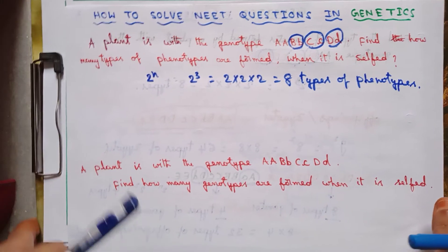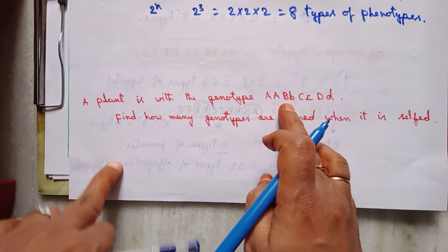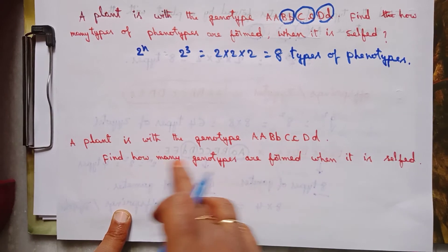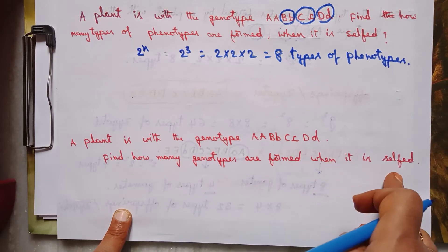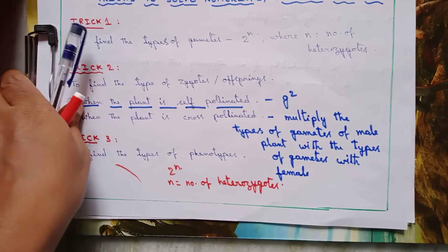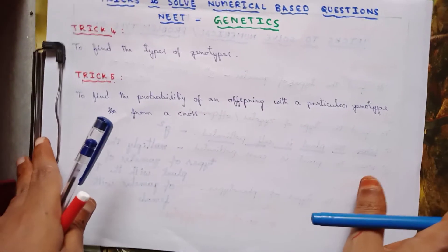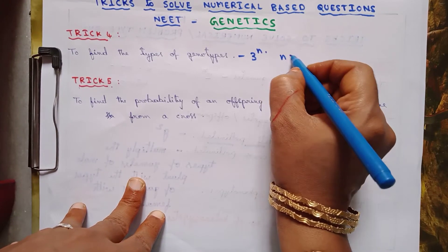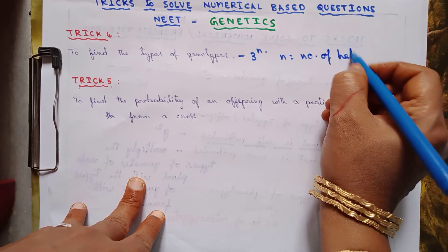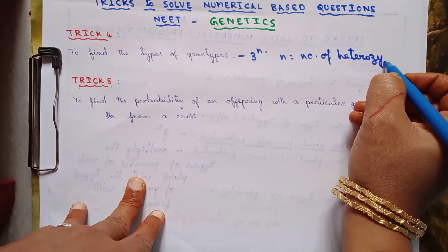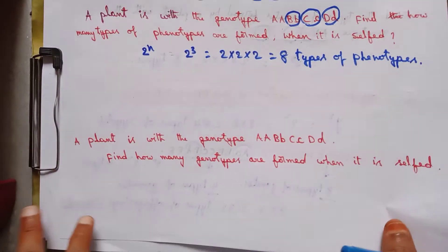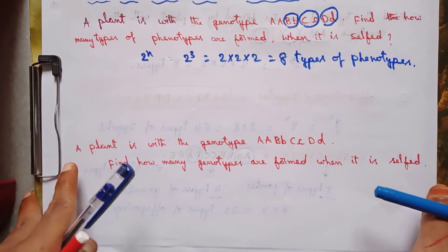Next question: a plant has the same genotype — capital A capital A, capital B small b, capital C small c, capital D small d. Find how many types of genotypes are formed when it is selfed. To find the types of genotypes, we use another formula: 3^n, where n equals the number of heterozygotes present in the given genotype of that plant.